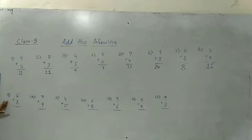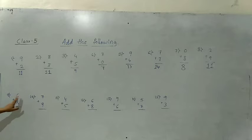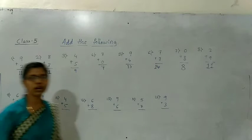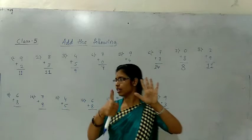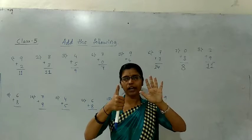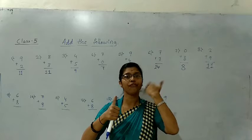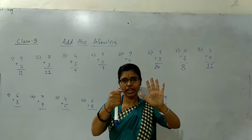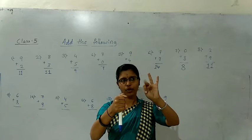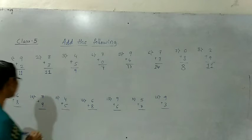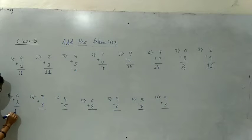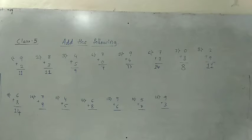Next one: 6 plus 8. Remember dear students, while adding these two we should hold the upper number — that is 6. The below number is 8. Count after 8: nine, ten, eleven, twelve, thirteen, fourteen. The answer is 14 for the ninth question.